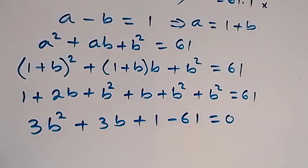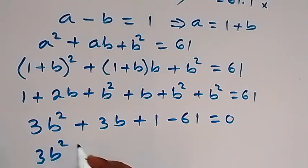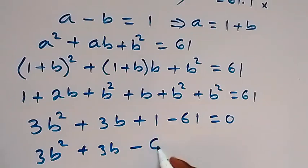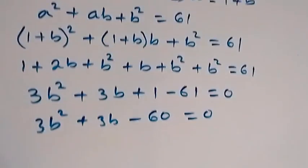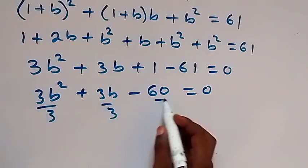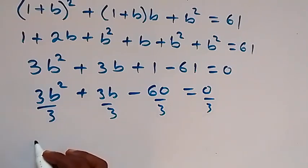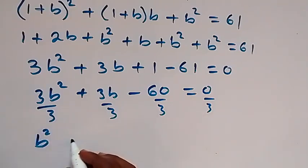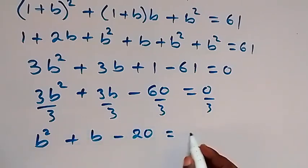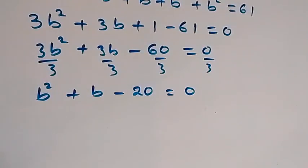This simplifies to 3b² + 3b - 60 = 0. Dividing through by 3, this reduces to b² + b - 20 = 0. We can now factorize this quadratic equation.